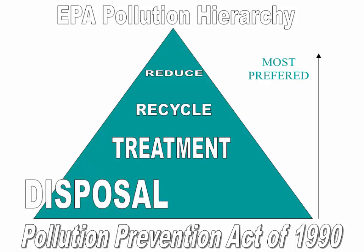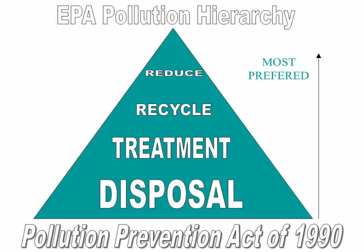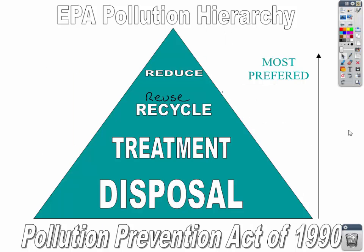The third action is to treat the waste, usually through incineration at waste-to-energy plants. The least preferred option is disposal in landfills. This hierarchy is shaped like a triangle because reducing — the most preferred action per the EPA — is actually the least done. About 33% of our materials are recycled, but most waste ends up in disposal. That's something we need to work on, as laid out by the EPA Pollution Hierarchy.